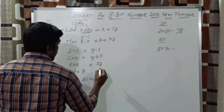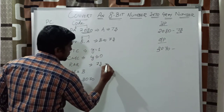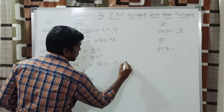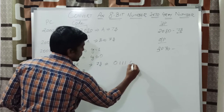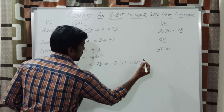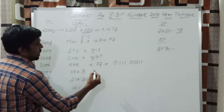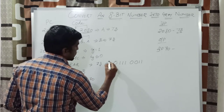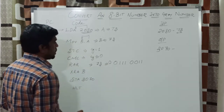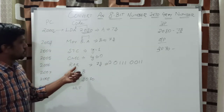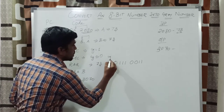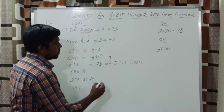First, write the binary number for 73, which is 0111 0011. The carry value is 0. Before execution of this instruction, the carry bit is 0.